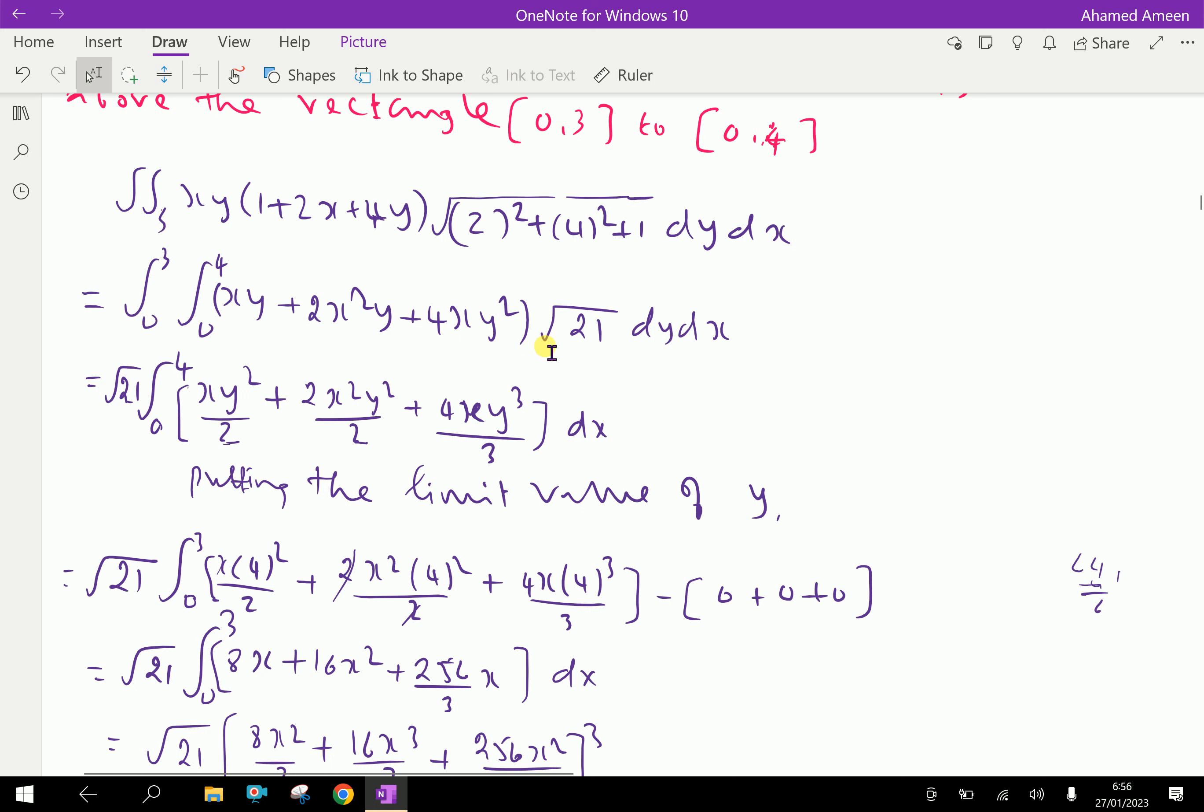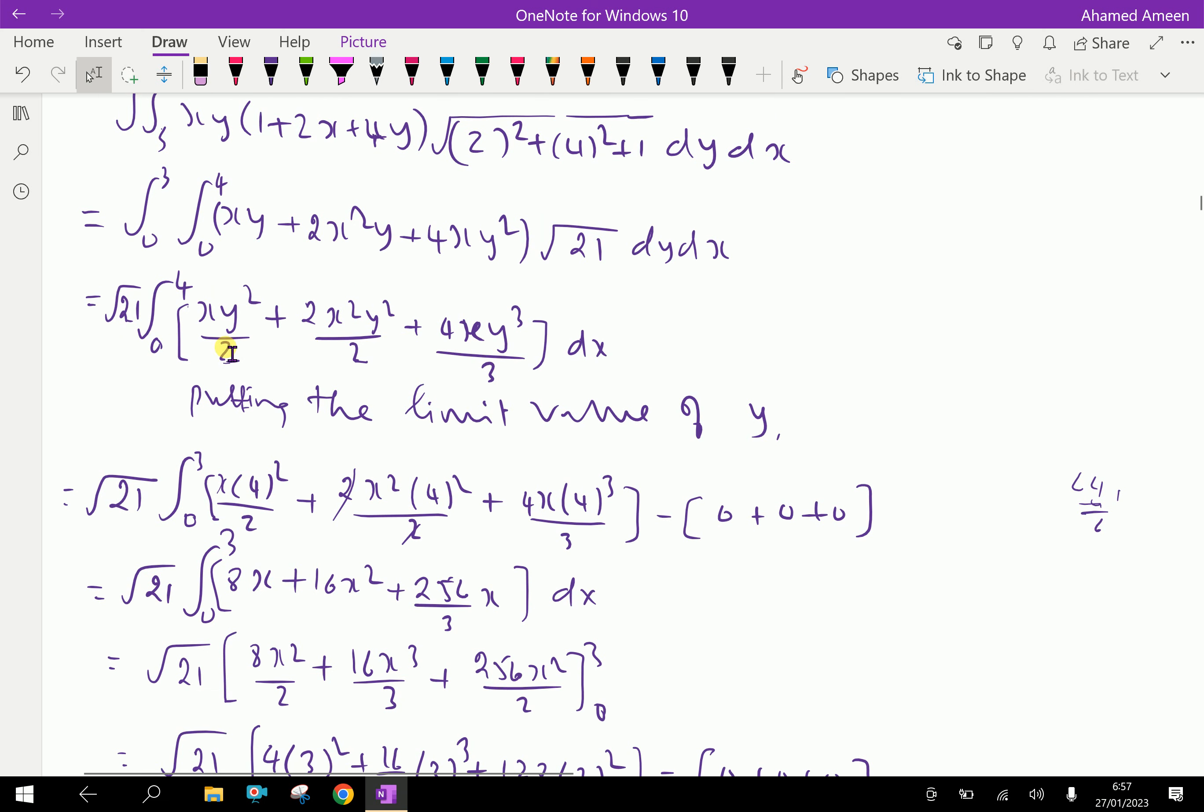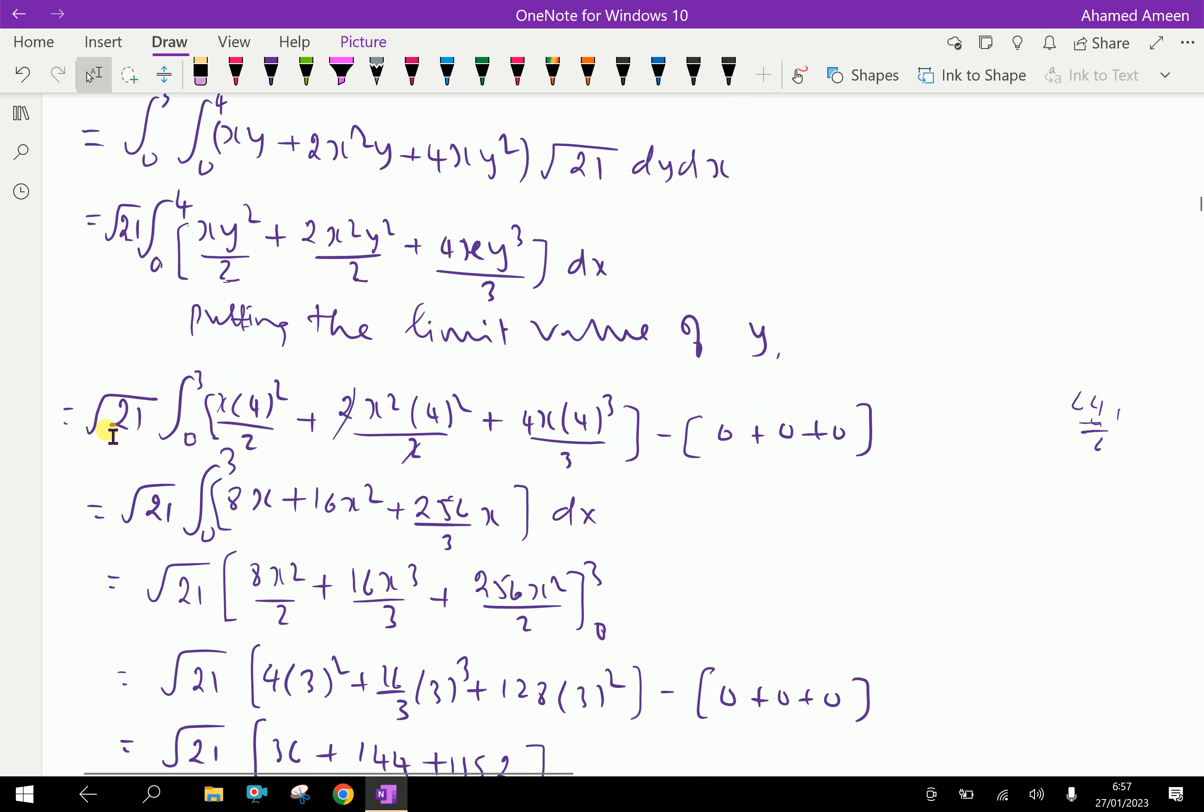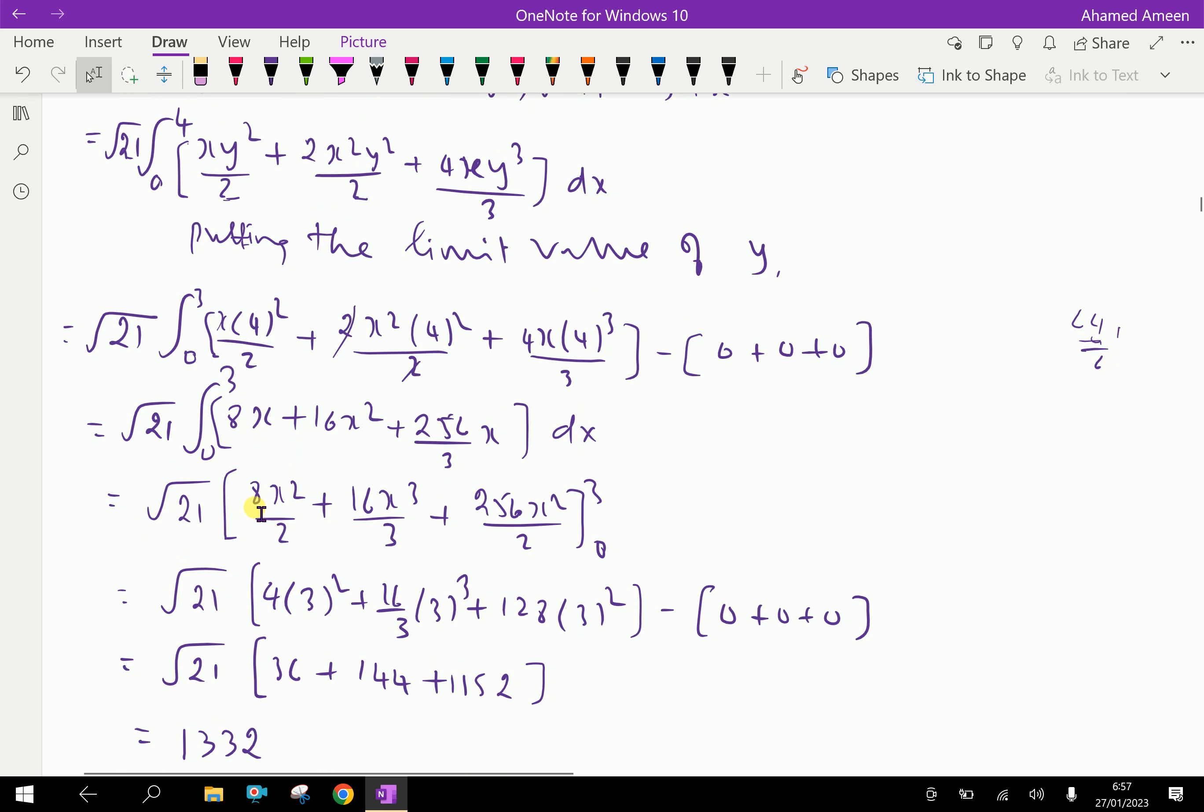First we calculate the inner integral. That is √21 times integral from 0 to 4 with respect to dy: xy²/2 + 2x²y²/2 + 4xy³/3. Putting the limit values y = 4 to 0, we get √21 times [8x + 16x² + 256x/3] dx.